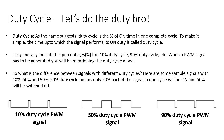And if I say 50% duty cycle, the signal is expected to be ON for 50% of the duration — you can see that here, 50% ON in one cycle. Similarly, at 90%, the signal will be ON for 90% and OFF for 10%. That's all.